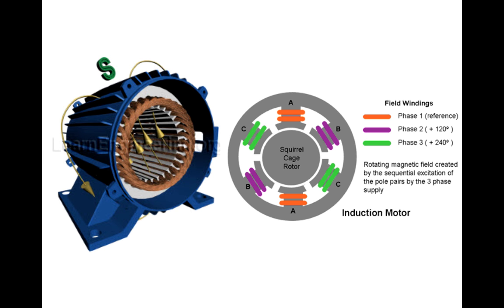Once the windings are connected to an electric source — phase A connected to the A windings, phase B to B, and phase C to C — the electric current flowing through those coils induces a magnetomotive force. The two coils in each winding, for example the two orange coils, create MMF acting in the same direction. This results in a current-induced magnetic field with field lines crossing the rotor in the middle. The same applies for each of the three pole pairs.